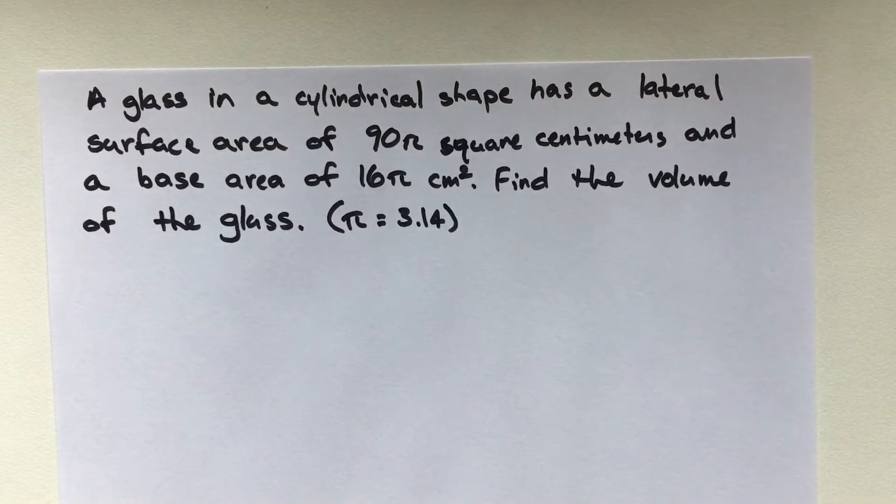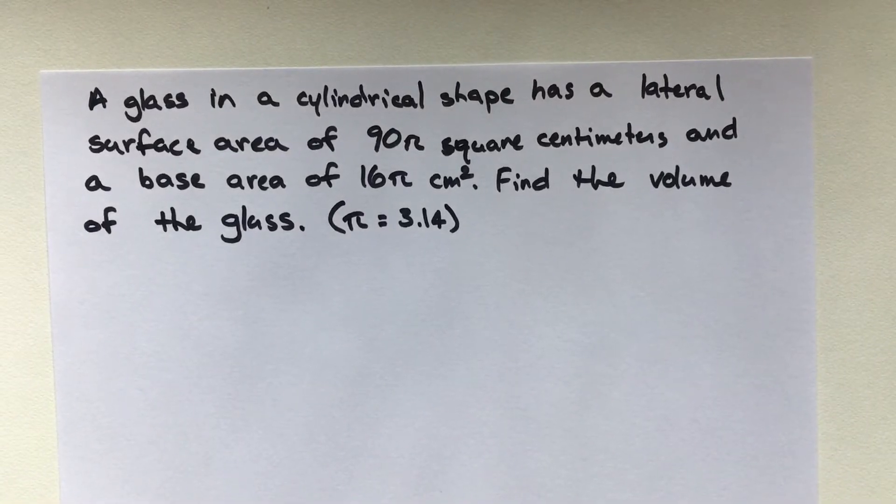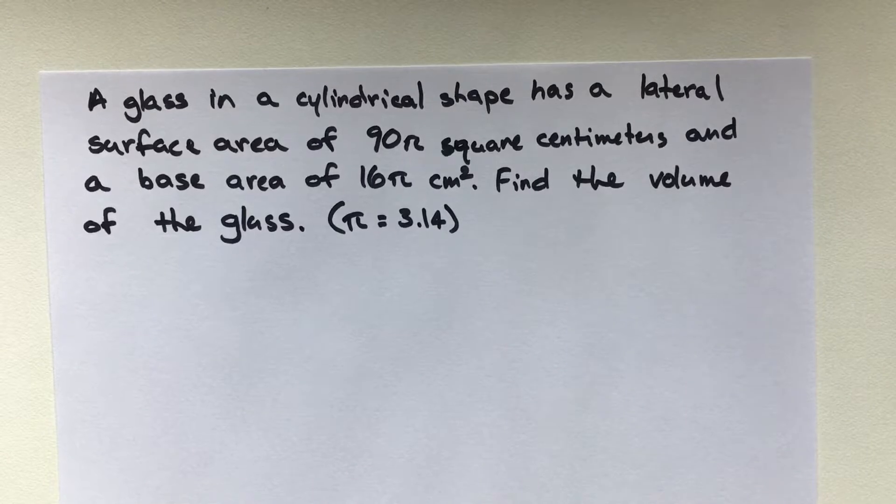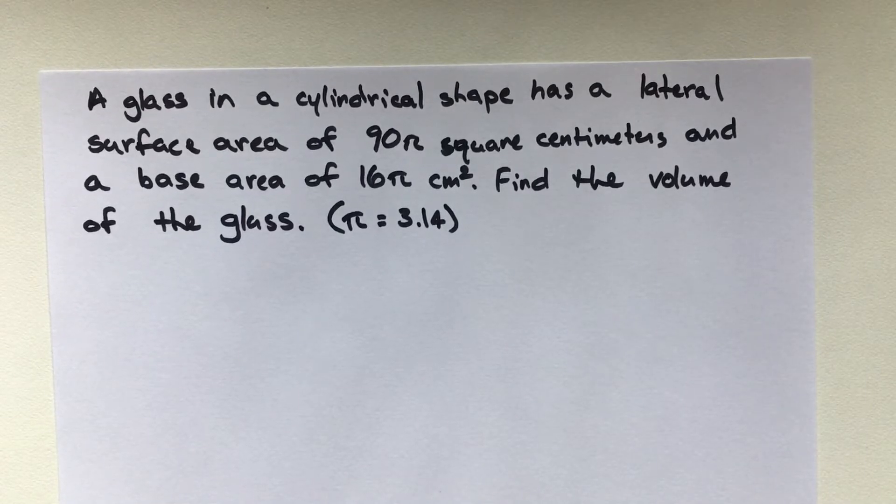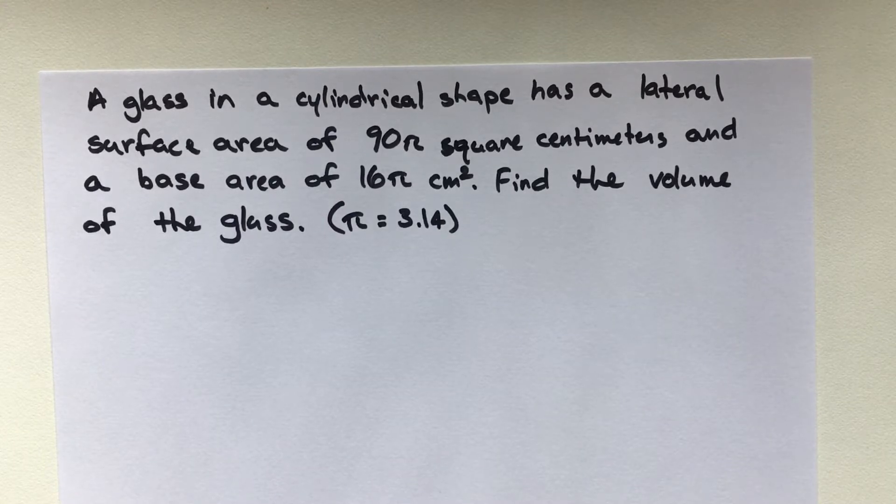So, in this question, we have a glass that's in a cylindrical shape, and it has a lateral surface area of 90π square centimeters and a base area of 16π centimeters squared. Find the volume of the glass if π equals 3.14.